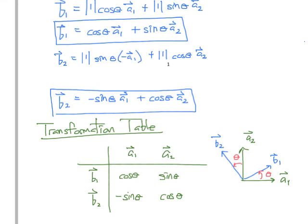Looking at our diagram to the right, if we project A1 onto B1, it's a length of cosine theta in the positive B1 direction. And then A1 onto B2, it's a length of sine theta in the negative B2 direction.